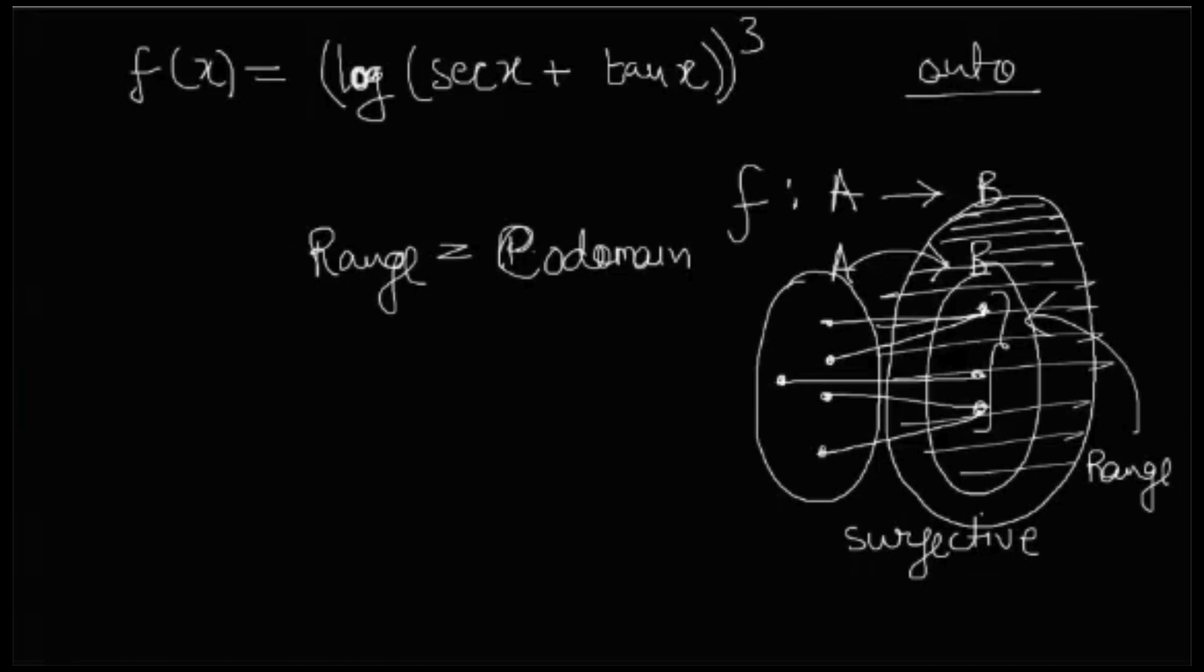It has to be surjective. Because any function to its range is surjective. That's how range is defined. Okay. If you put codomain as equals to the range, then it is surjective or onto.